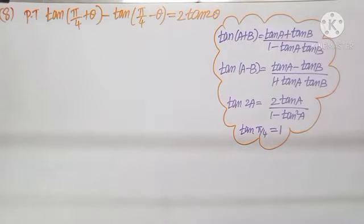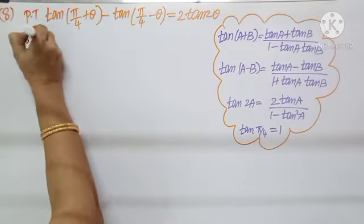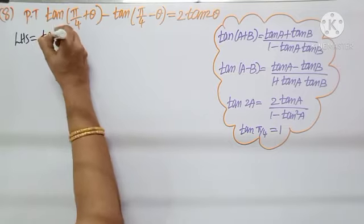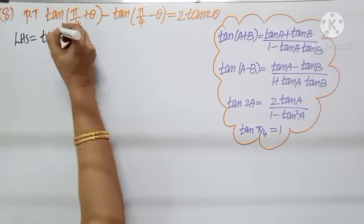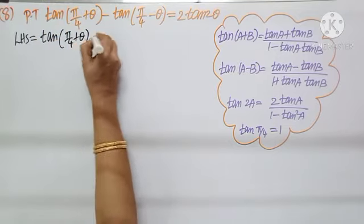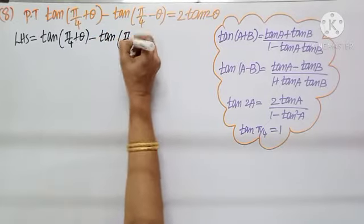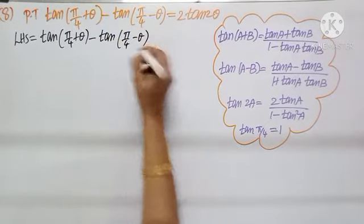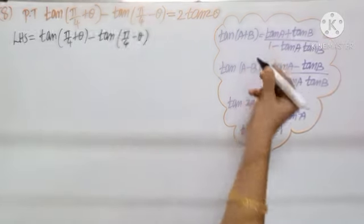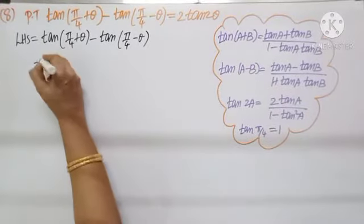Question number 8: prove that tan(π/4 + θ) minus tan(π/4 - θ) equals 2 tan 2θ. Looking at the LHS, we need two formulas: tan(a+b) and tan(a-b). Let us substitute.